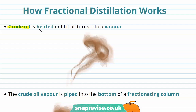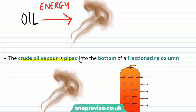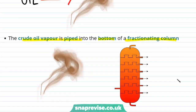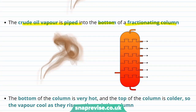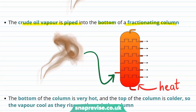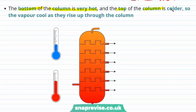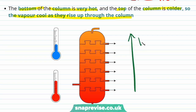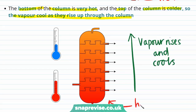In order to carry out fractional distillation, crude oil is heated until it turns into a vapour, which requires a significant amount of energy. This crude oil vapour is then piped into the bottom of what is known as a fractioning column, as shown on the right-hand side of this diagram. A fractioning column is heated from the bottom and is designed so that the bottom of the column is very hot, whereas the top of the column is much cooler. As the vapours rise up from the bottom of the column, they begin to cool as they get further from the heat source.